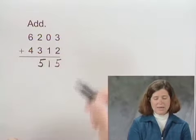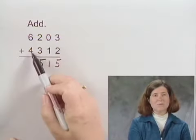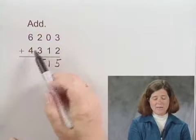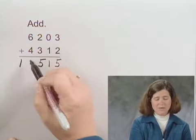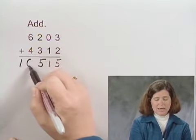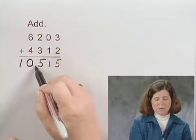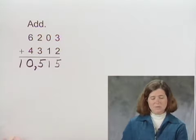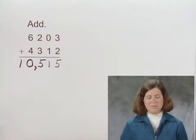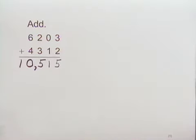And adding the thousands, six plus four is ten thousands, or one ten thousand and zero thousands. Writing in a comma to separate the periods, we have the sum is 10,515.